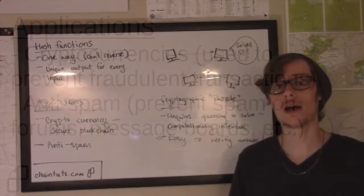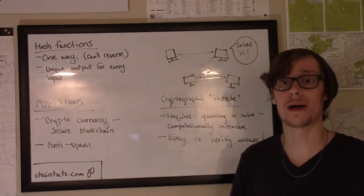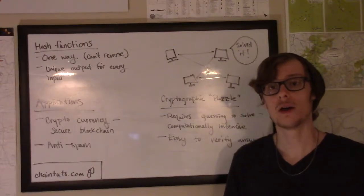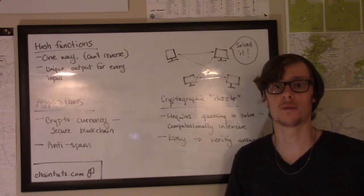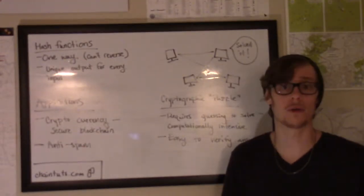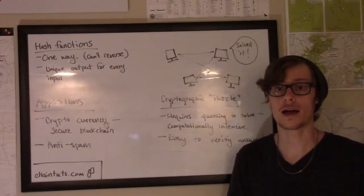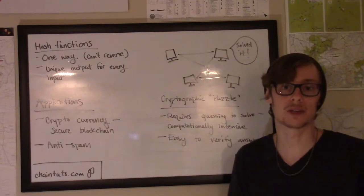This HashCash required users of technologies like an internet forum, message board, or email to do a small proof of work problem before they could send out a message or create a post. This proof of work problem would only take maybe half a second or one second to solve, and so it was unnoticed by everyday users.